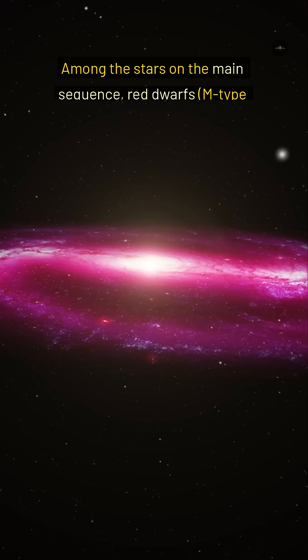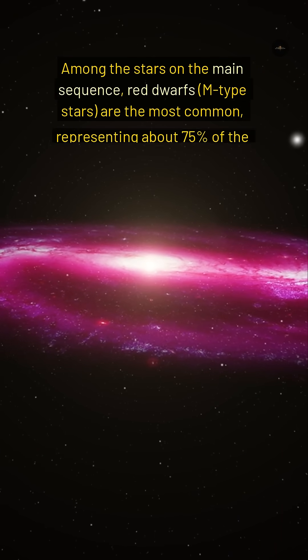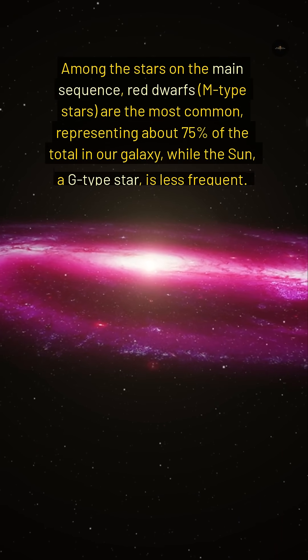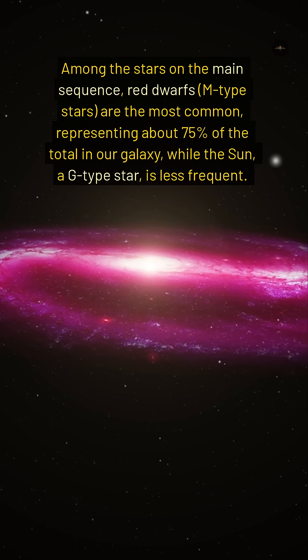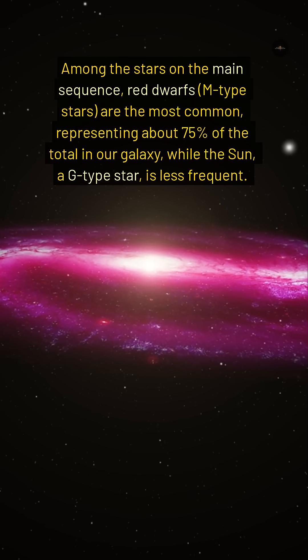Among the stars on the main sequence, red dwarfs, M-type stars, are the most common, representing about 75% of the total in our galaxy, while the Sun, a G-type star, is less frequent.